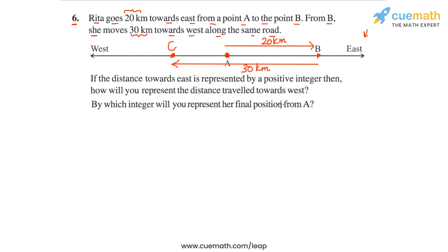So this is how Rita has moved. The problem statement asks: if the distance towards east is represented by a positive integer, then how will you represent the distance traveled towards west? And by which integer will you represent her final position from A?